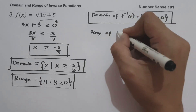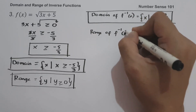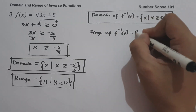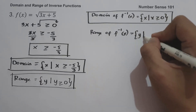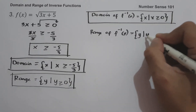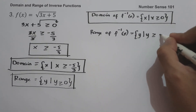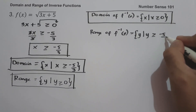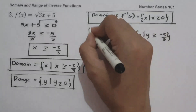This will be the domain of the inverse function. And the range of the inverse function is the set of y values such that y is greater than or equal to negative 5 over 3. This will be the range of the inverse function.